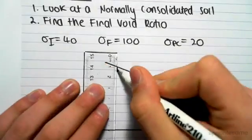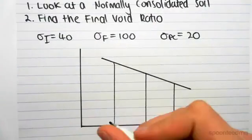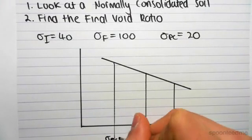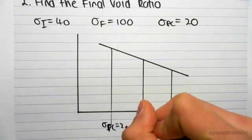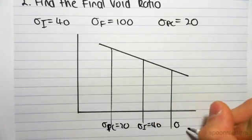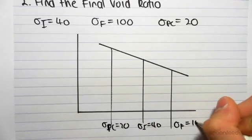I would dash down all my points. So here's sigma pre-consolidated at 20, here's sigma initial at 40, and here's sigma final at 100.